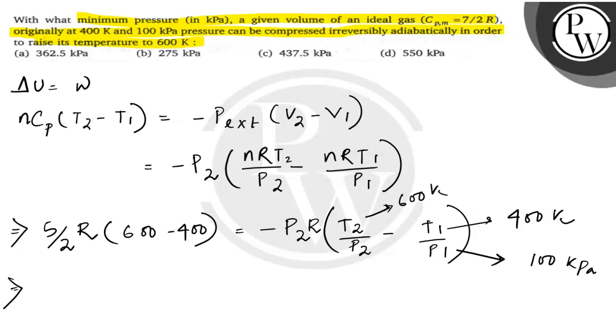Putting all these values together, we will be getting P2 as 275 kilopascal. Toh, 275 kilopascal diya hai option B mein, so the correct answer will be option B. Thank you.